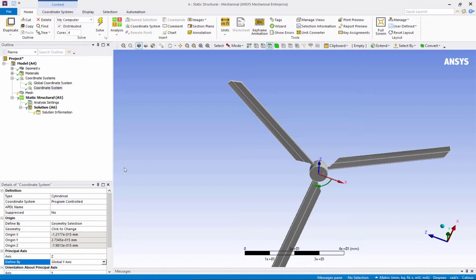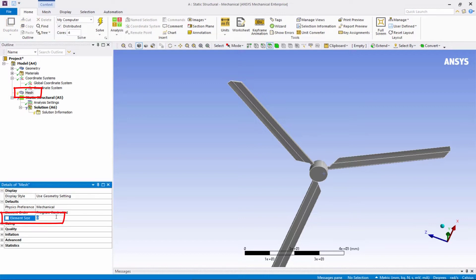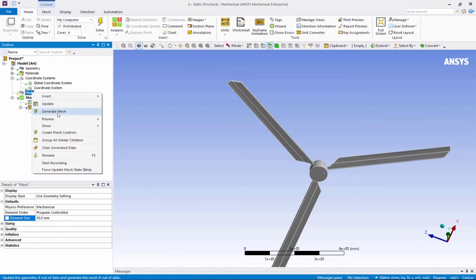Let us generate the mesh. So for that, click on Mesh. For the element size, specify 50 mm under the mesh details. Now right-click on Mesh and generate Mesh.